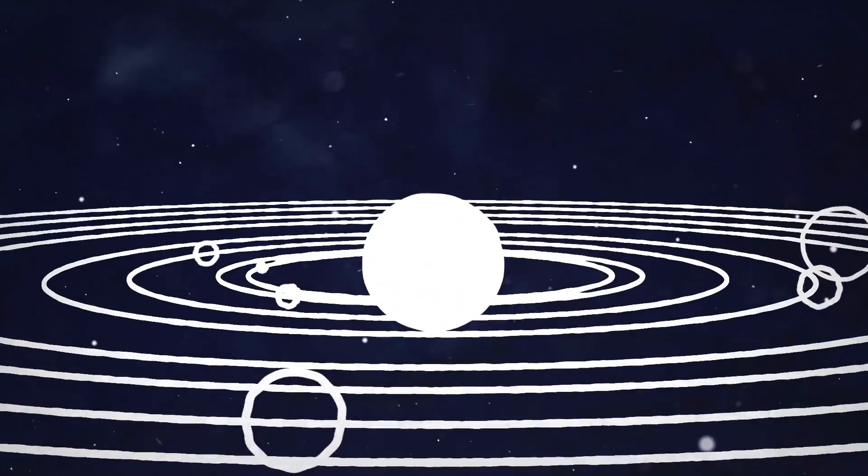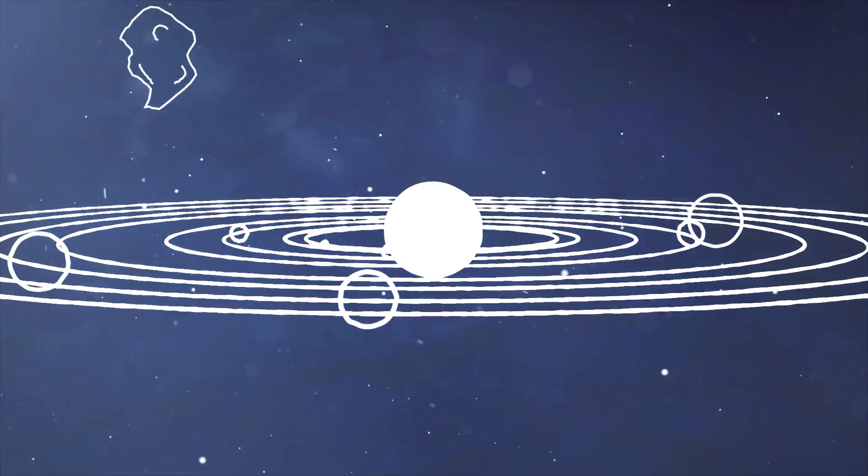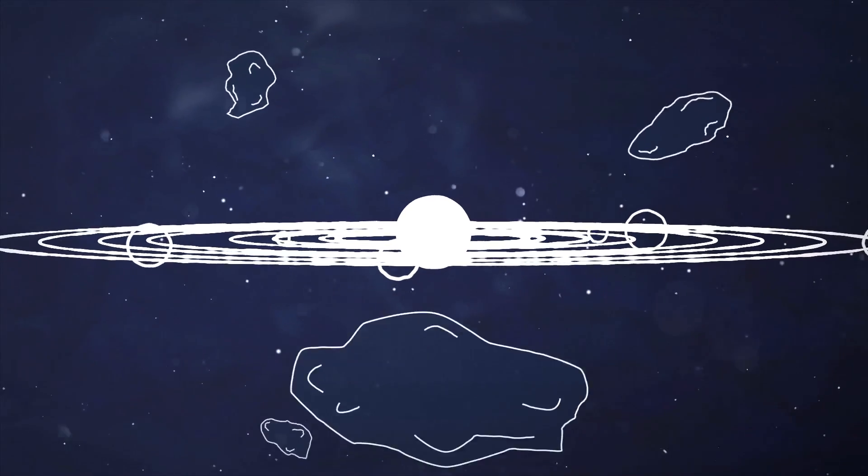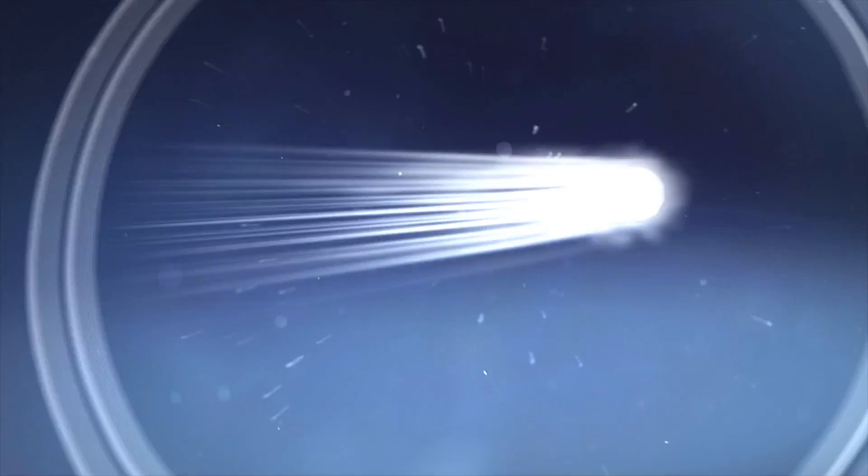Looking for this ancient magnetic field is not an easy task because you have to find something that's very old and that's well preserved. That's the special role that comets play—they're kind of an archive of the earliest conditions of the solar system.